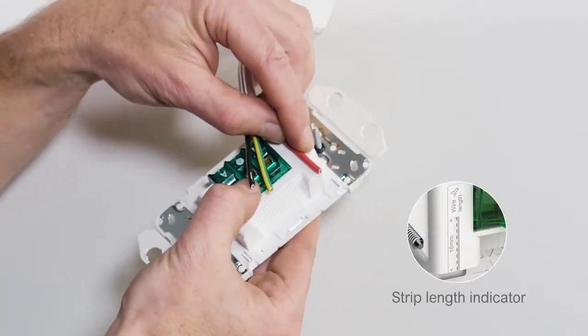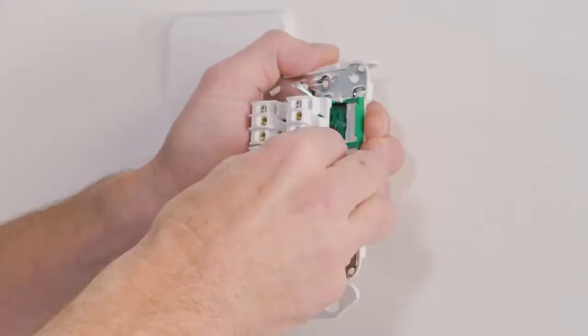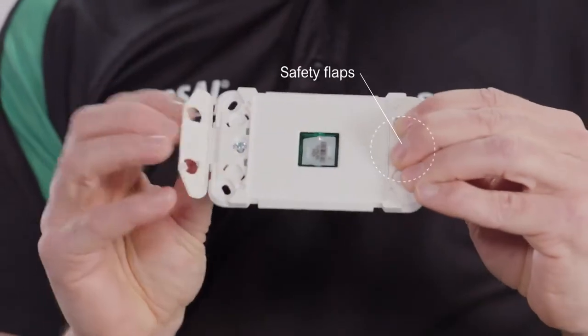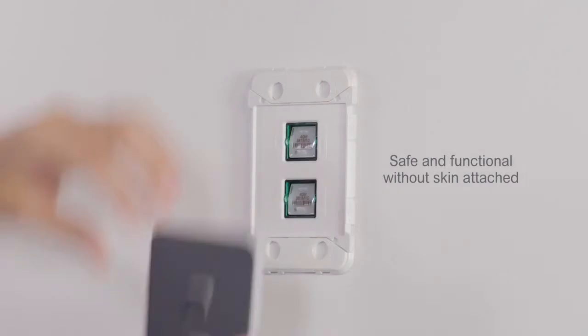Each grid features a strip-length indicator. There are strong metal frames on the grids, and they can take up to 6 mechs. Plus, these safety flaps make the product safe, so your customers can change skins by themselves.